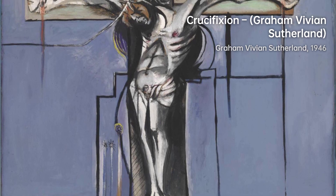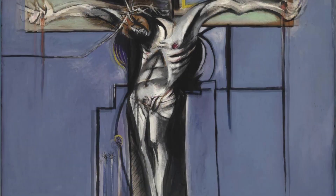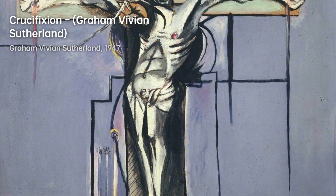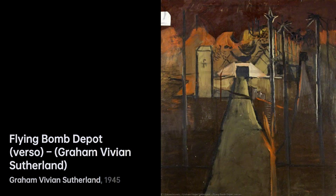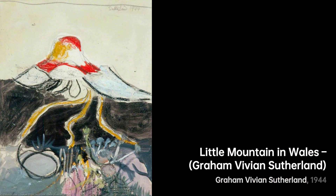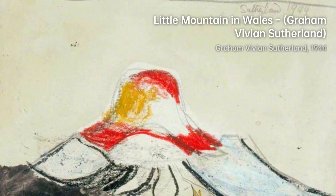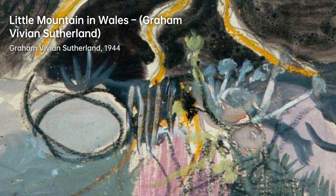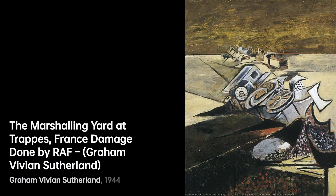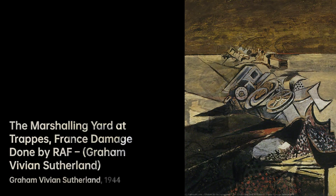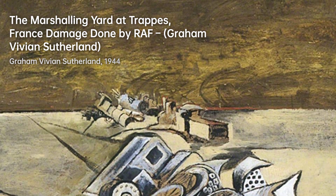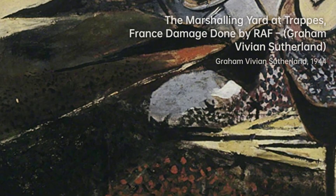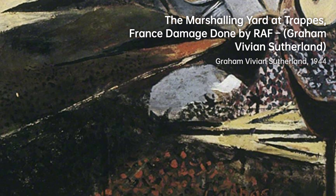In the later years of his life, Sutherland explored different themes and subjects in his art. He delved into the devastating effects of war, depicting scenes of destruction and desolation in paintings like Devastation, 1941, City, Panorama of Ruin, and The Marshaling Yard at Traps, France Damaged Done by RAF. Despite the challenges posed by the era, Sutherland continued to create thought-provoking artwork that pushed the boundaries of traditional painting.